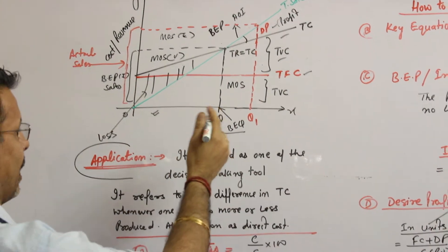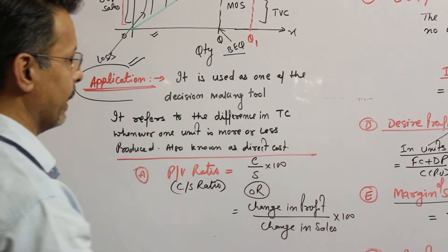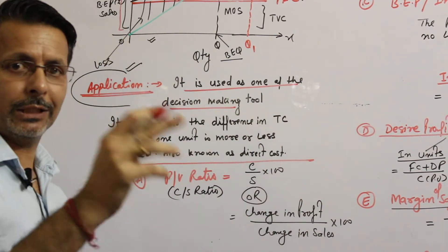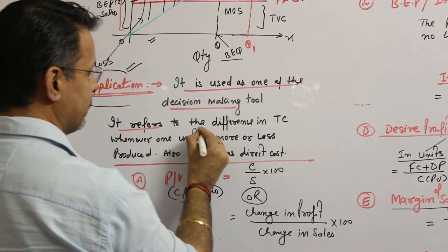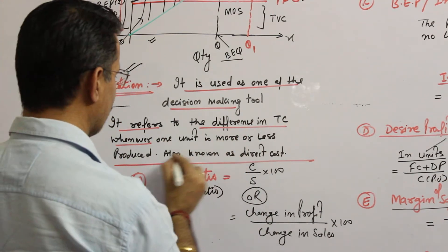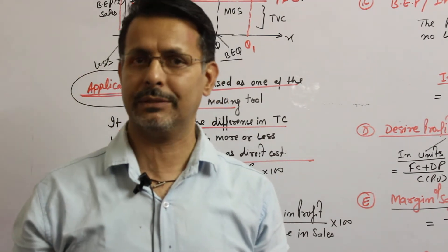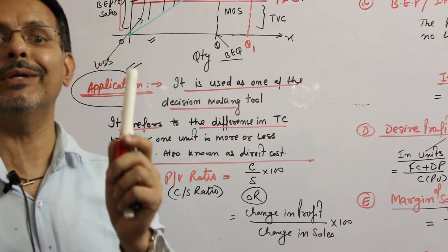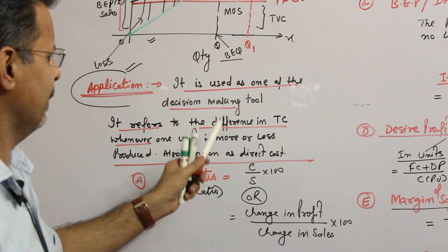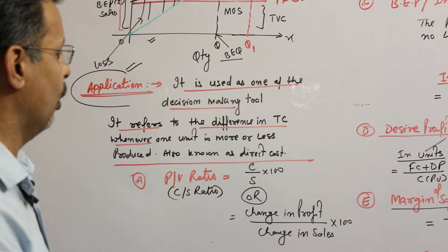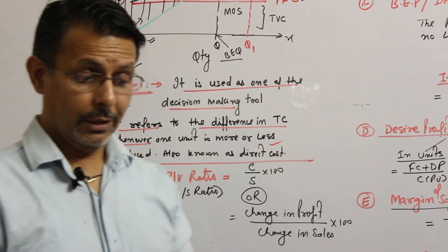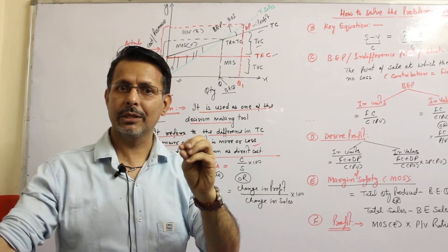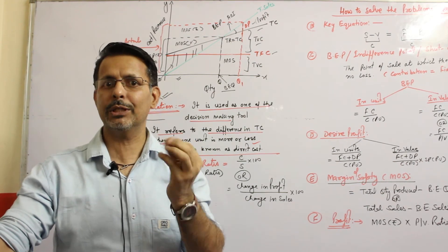The marginal costing chart is basically used as one of the decision-making tools — it is a top-level management decision-making tool. In marginal costing, the total cost is divided into two segments: total fixed cost and total variable cost. This chart can be used for profit planning and production planning — how many units to produce and how much profit is desired.